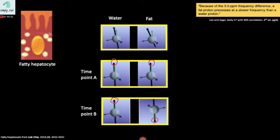This time point A is called the in-phase image, while this time point B is called the out-of-phase or opposed-phase images. These images are created by gradient echo sequences where we listen to the echo twice, one at time point A and another at time point B.